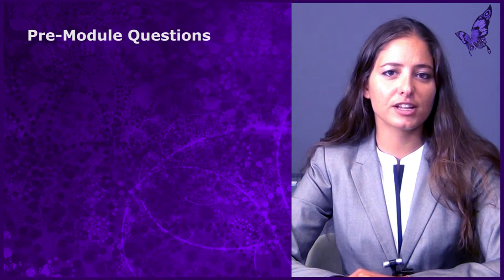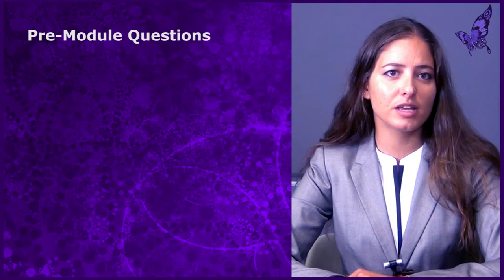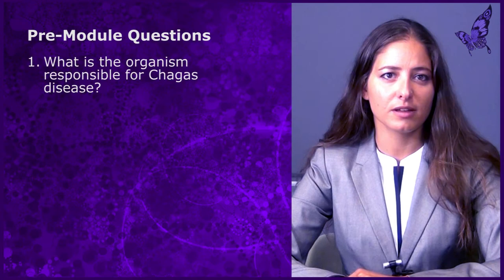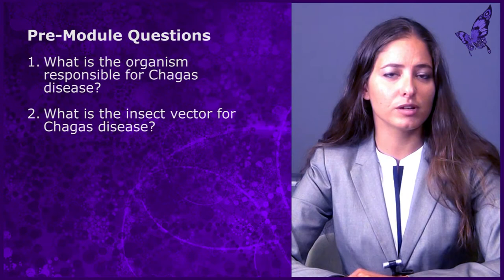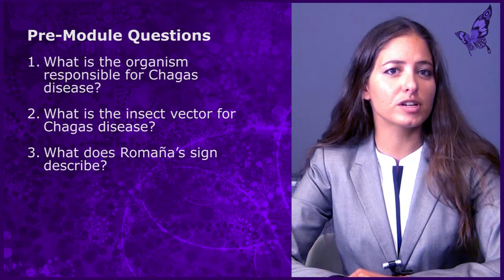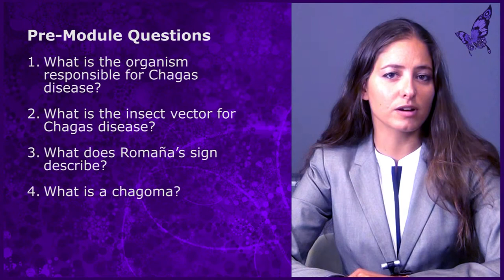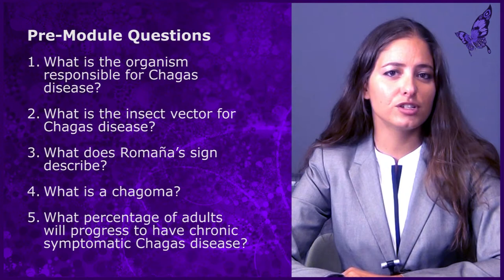Let's start with a few questions to get you thinking about Chagas disease. We will review these questions at the end of the module to give you a chance to apply the knowledge you have gained. Question one: What is the organism responsible for Chagas disease? Question two: What is the insect vector for Chagas disease? Question three: What does Romana's sign describe? Question four: What is a Chagoma? Question five: What percentage of adults will progress to have chronic symptomatic Chagas disease?